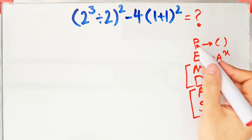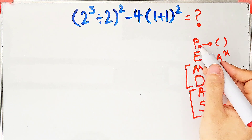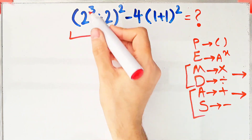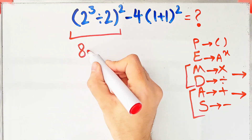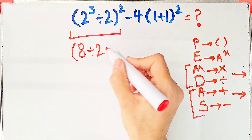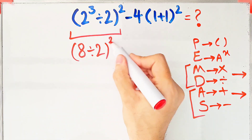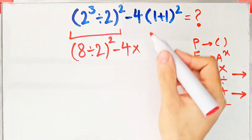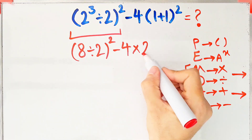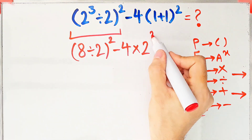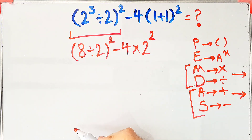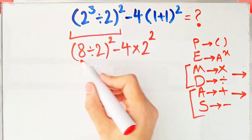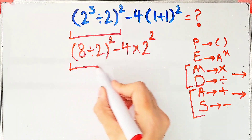According to the PEMDAS rule, first we simplify the parenthesis. Two to the power of three equals eight. We have eight divided by two, then all of them to the power of two, minus four, then times one plus one which equals two, then to the power of two. Again simplifying the parenthesis: eight divided by two equals four.